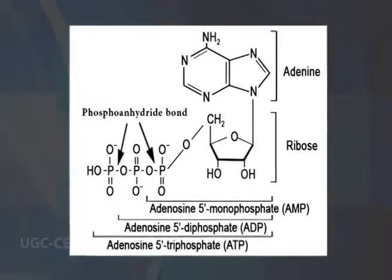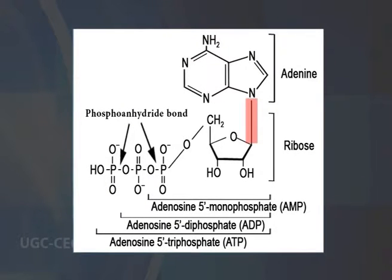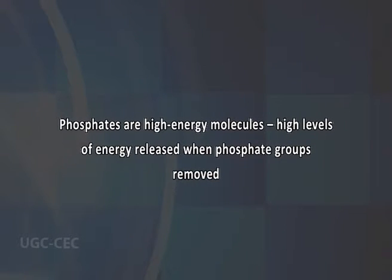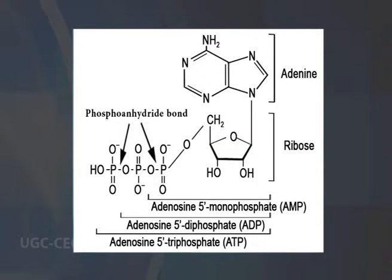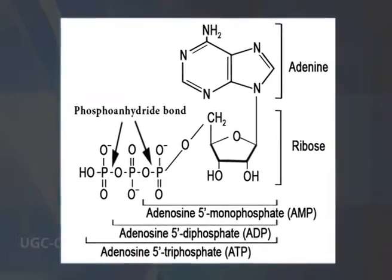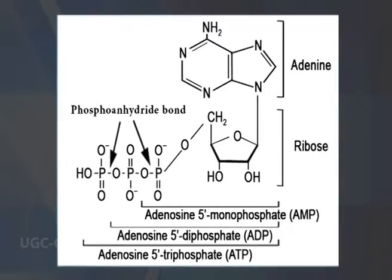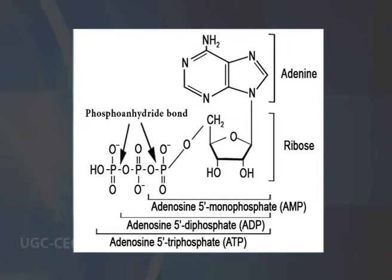The molecule also contains a glycosidic bond holding the ribose and adenine together. Phosphates are well-known high-energy molecules, meaning comparatively high levels of energy are released when the phosphate groups are removed. The high-energy content is not the result of simply the phosphate bond, but the total interaction of all atoms within the ATP molecule.